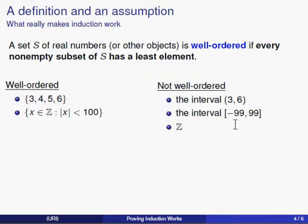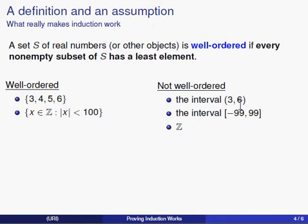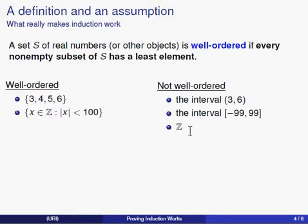Even though the set as a whole has a least element—negative 99 is in the set and is the smallest—we need every non-empty subset to have a least element. Since this interval contains the open interval from 3 to 6 as a subset, and that interval has no least element, the interval from negative 99 to 99 is not well ordered. Similarly, the set of integers is not well ordered—there is no smallest integer.